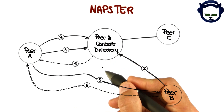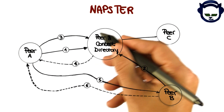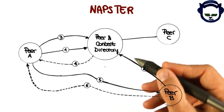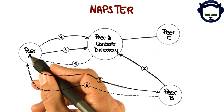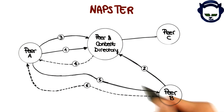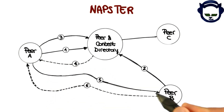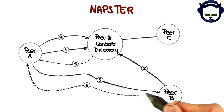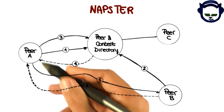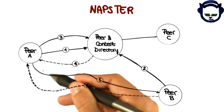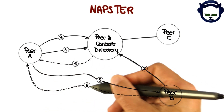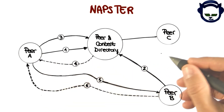This is where the system is no longer a client-server system. Because at this point, the two peers are connected directly — we have a peer-to-peer interaction. After getting the request from peer A, peer B will start sending the content to peer A.